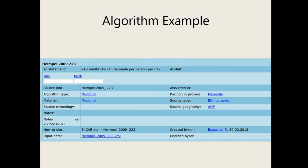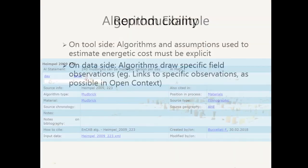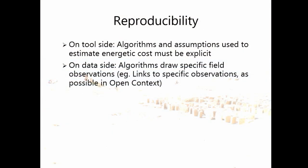Here is just one example: how many mud bricks can be made per day, with various hyperlinks organized by material source type and geography. This means that research using these algorithms is reproducible — both on the tool side, where the algorithms and assumptions used to estimate energetic costs are explicit, and on the data side, where the published algorithms clearly state the source and original bibliographical reference.